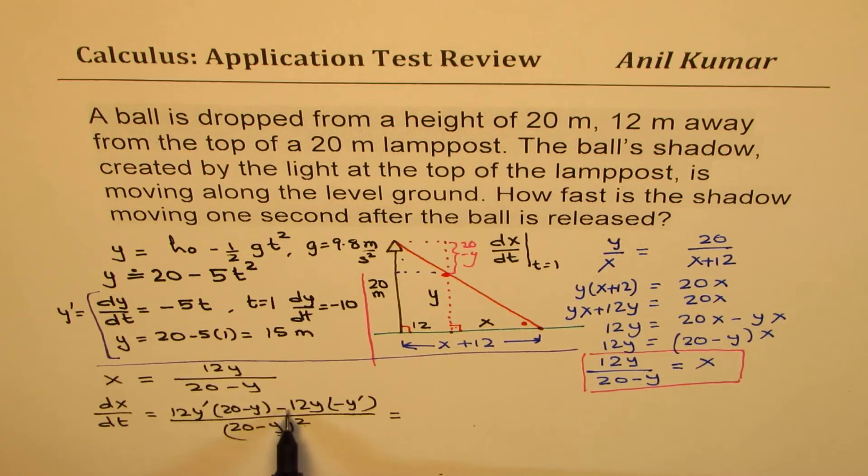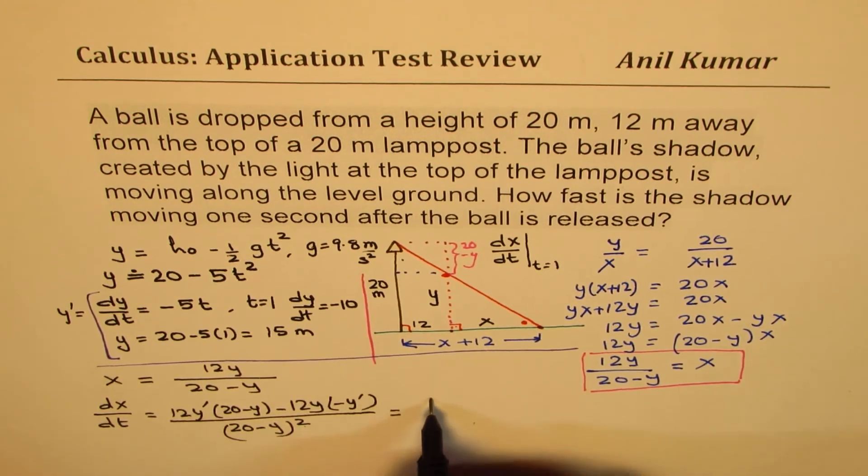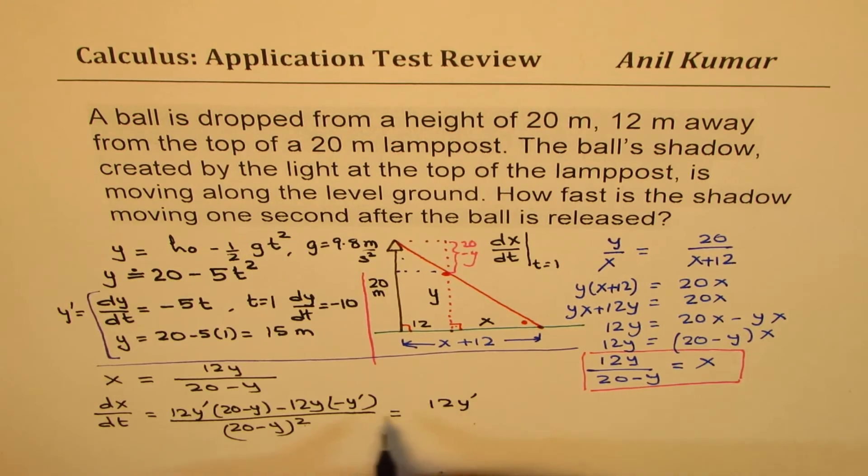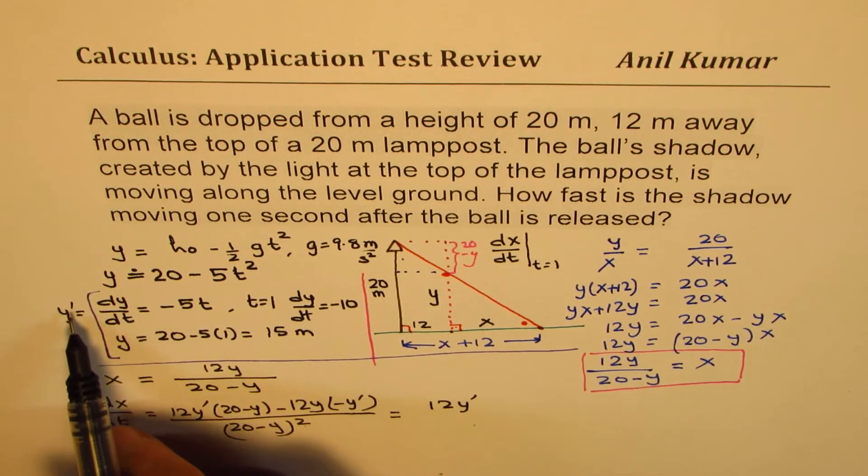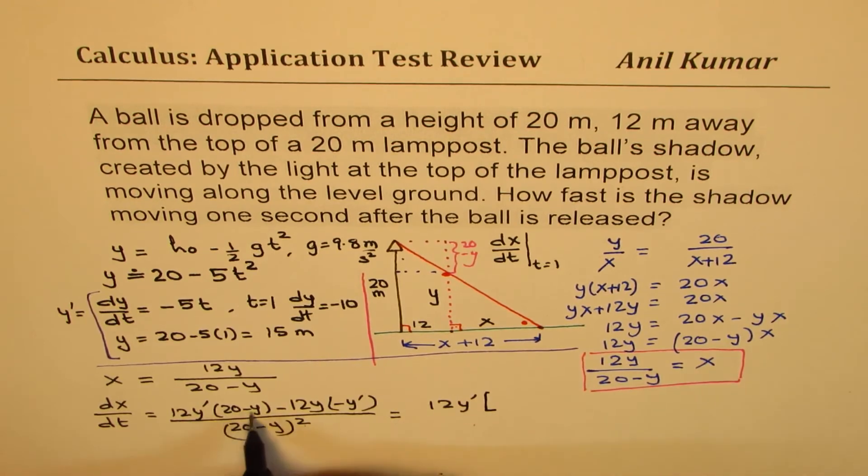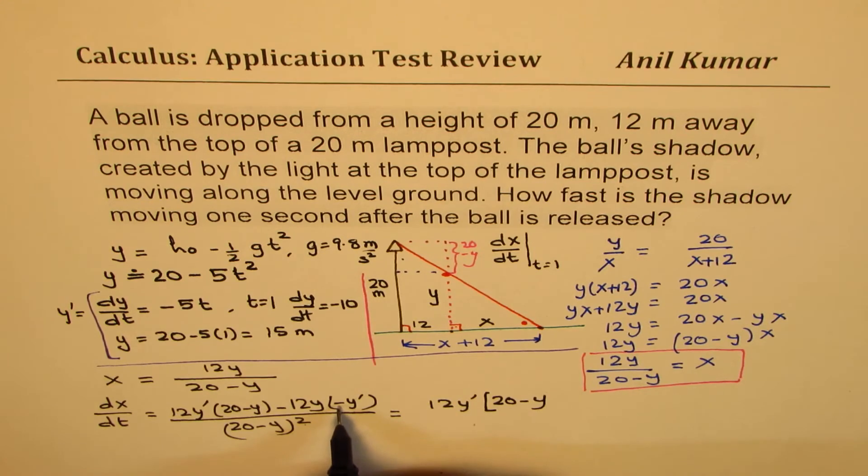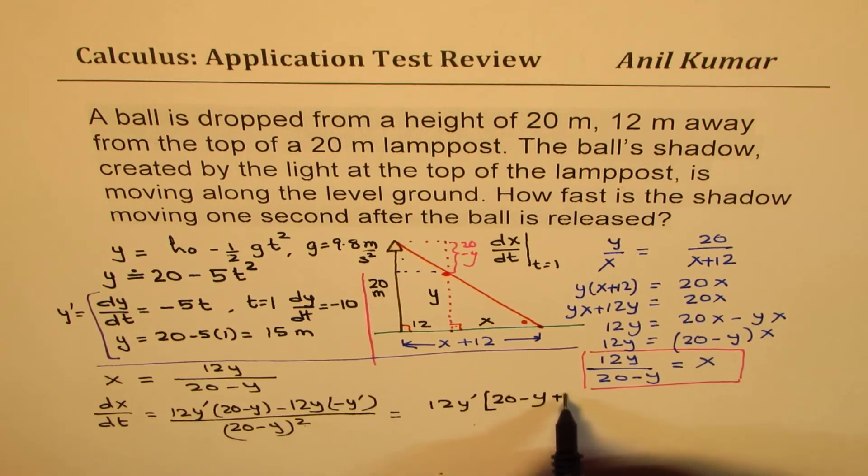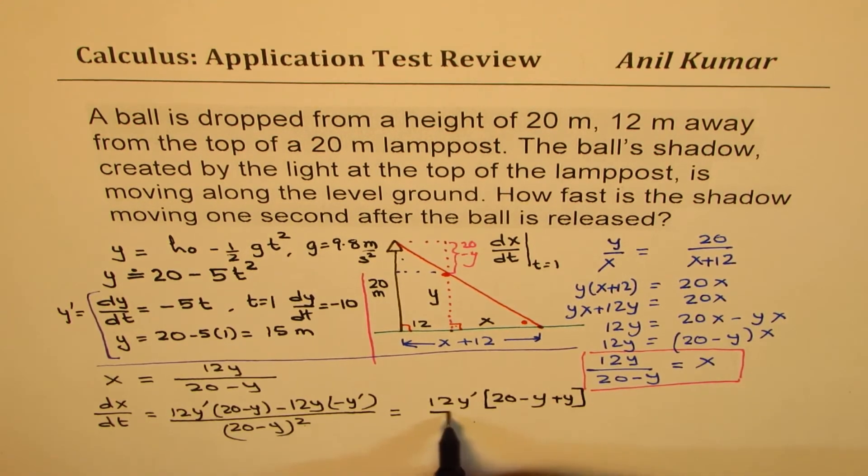Now from here in the numerator, we can take 12y prime common, which is dy/dt. And what we get here is 20 minus y. This minus and minus becomes plus, plus y, over (20 minus y) whole squared.